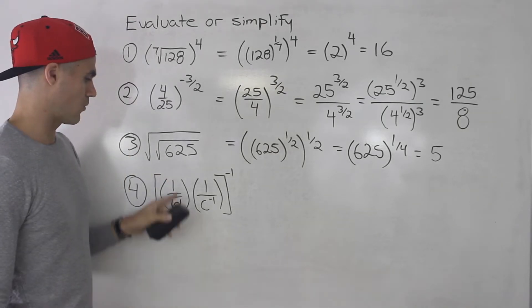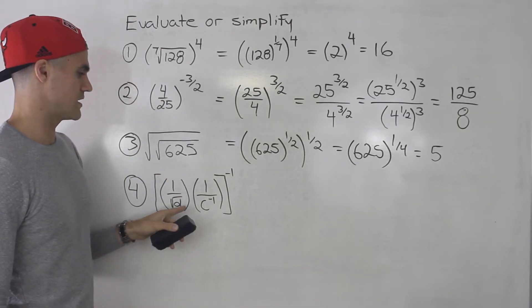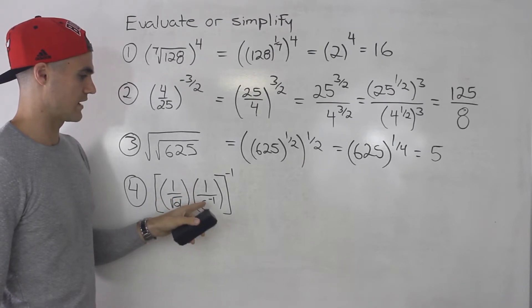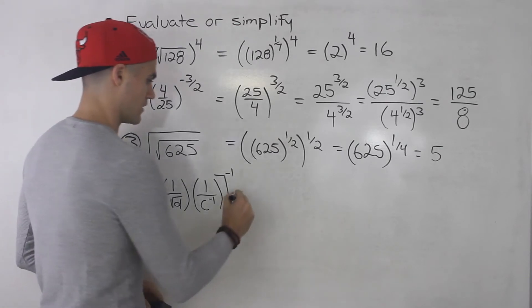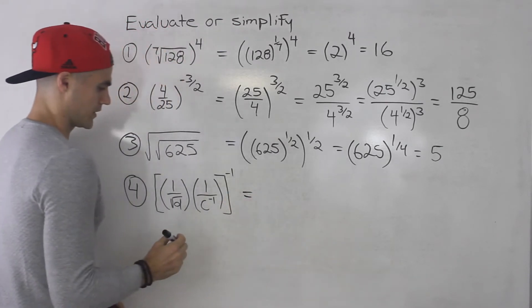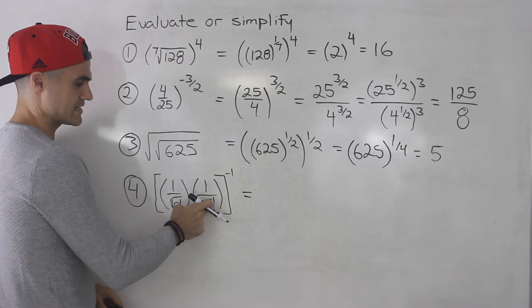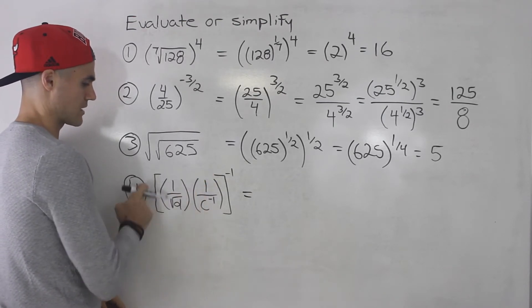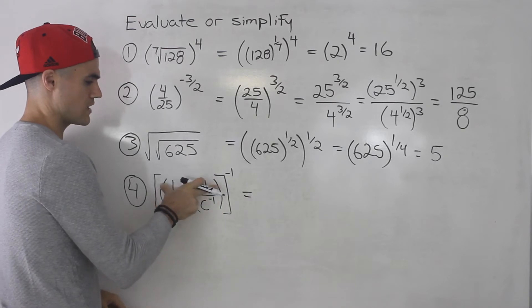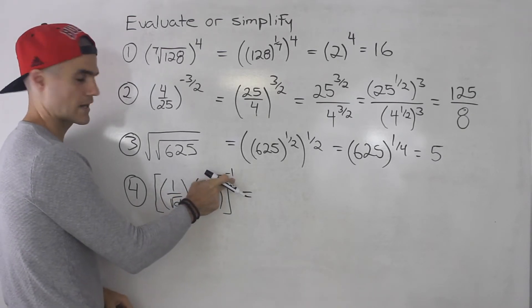And then number 4, we got 1 over the square root of d times 1 over c to the negative 1 and that's all to the power of negative 1. So here what I'm going to do is notice this c to the negative 1. I'm going to bring that up. So basically what I'm going to do is I'm going to first simplify the inside bracket and then I'm going to deal with that outer exponent.